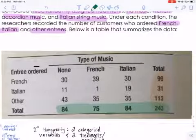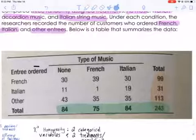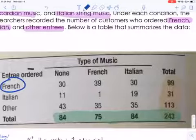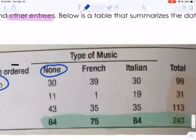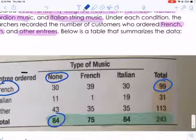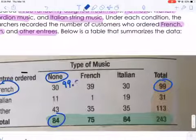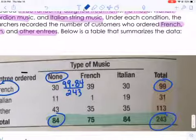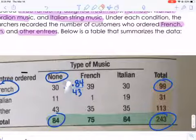So we're looking at our marginal distributions. We want to figure out, if this was evenly proportioned, what would we expect in each column here? We're going to start with the people who ordered French food and listened to no music. We are going to multiply our row total and our column total, 99 times 84, and divide that by the total number for our experiment here. So I'm going to do 99 times 84 divided by 243, and I'm going to get 34.22222. I'm just going to do 34.22.